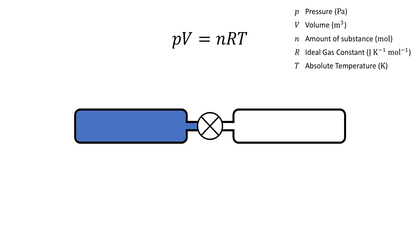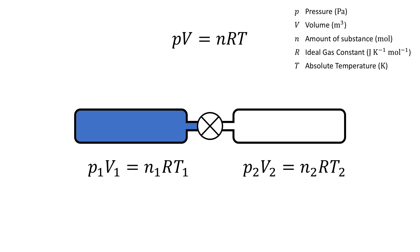For the first tube, before opening the valve, we have P1V1 equal to N1RT1. And for the second tube, we have the same expression but with twos in the subscript. But after we have opened the valve, the whole system becomes one tube, which we will call tube three. That final system can be described with P3V3 equal to N3 times R times T3.